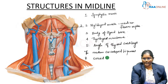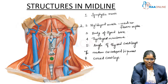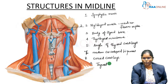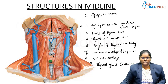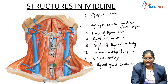The cricoid cartilage, represented as C, is a ring-shaped cartilage located at the level of the C6 vertebra. Just below that you can see a gland — this is the thyroid gland. The middle portion of the thyroid gland, where the two lobes meet, is called the isthmus of the thyroid gland. The isthmus covers the second, third, and fourth tracheal rings. Just below the thyroid gland you can see the rings of cartilage — these are the tracheal rings.